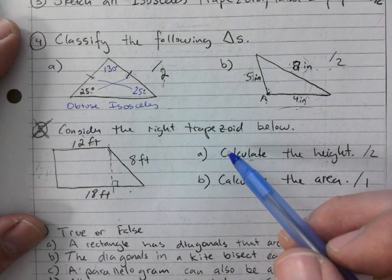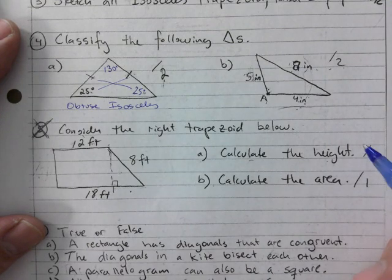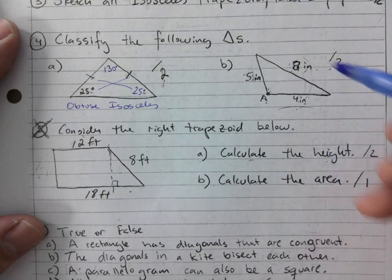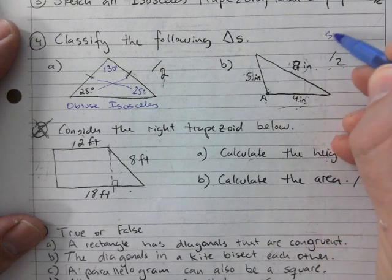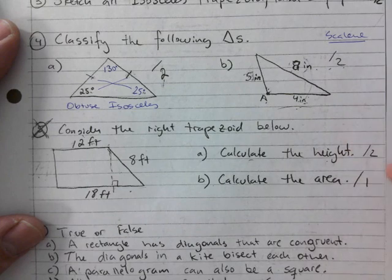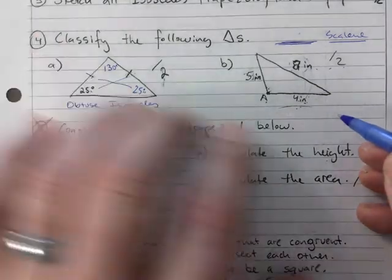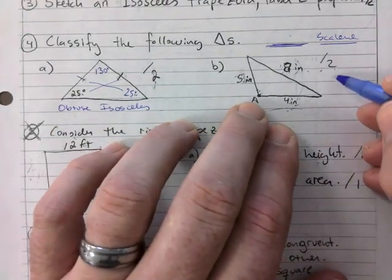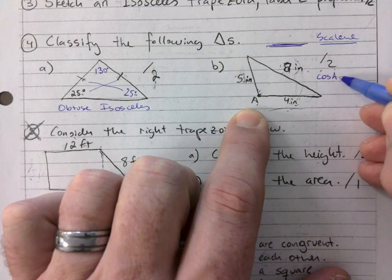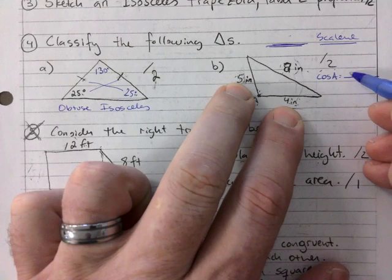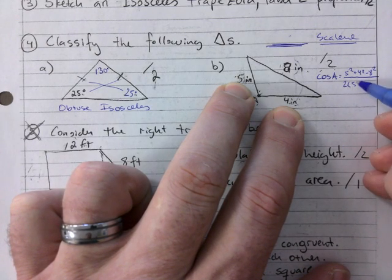On a test, write it in. For this one — three sides — that's not good enough to classify fully; you can say scalene, but we don't know about the angles. So using the law of cosines: 5² + 4² − 8² over 2 × 5 × 4.